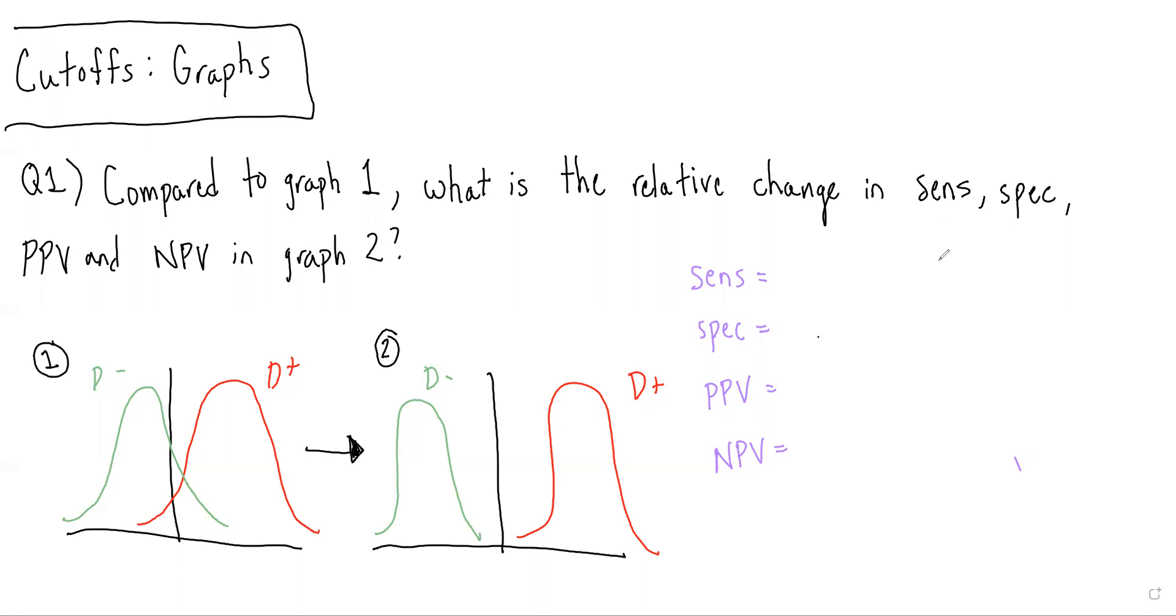We remember, sensitivity is the probability of getting a positive test result given we have the disease. So in this case, it would be among those with the disease, how many had a positive test result?